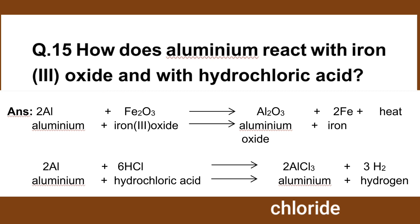Number 15. How does alumina react with iron(III) oxide? This is the thermite reaction: Al2O3 plus Fe2O3 gives Al2O3 plus Fe (iron). This is an exothermic reaction.